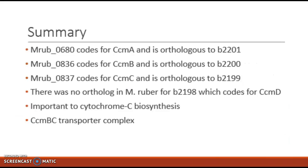Looking back, our initial hypothesis was confirmed, showing that MRub680, 836, and 837 code for the proteins CCM-A, CCM-B, and CCM-C, respectively. Additionally, these proteins have orthologs in E. coli that represent the same system, except that E. coli contains an extra protein, CCM-D, which is not present in M. Ruber. We also discussed that these genes are all part of a single operon in E. coli, whereas for M. Ruber, the genes for CCM-B and CCM-C are part of an operon, while the locus for CCM-A is much farther upstream and separate from the other two proteins within the system.